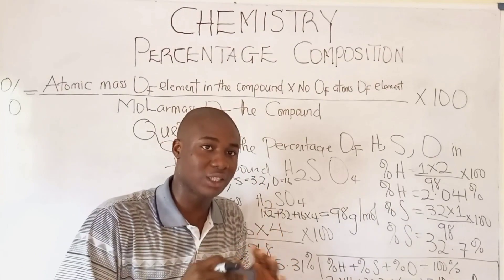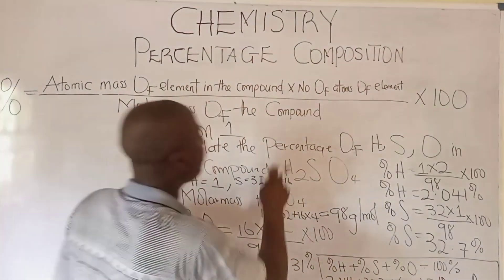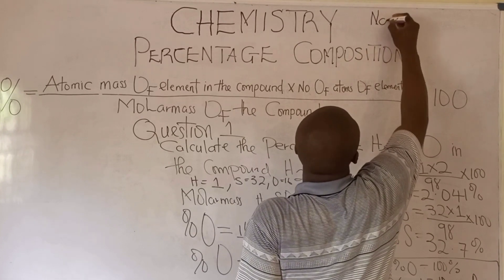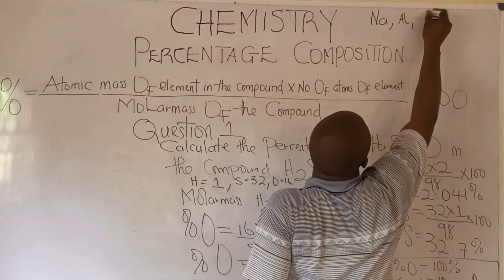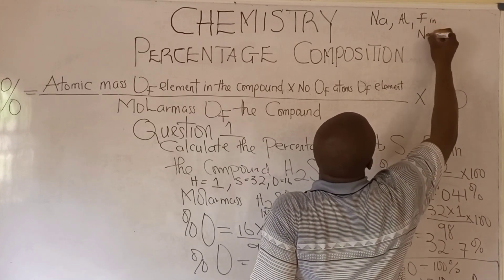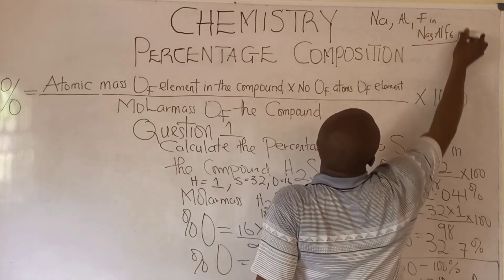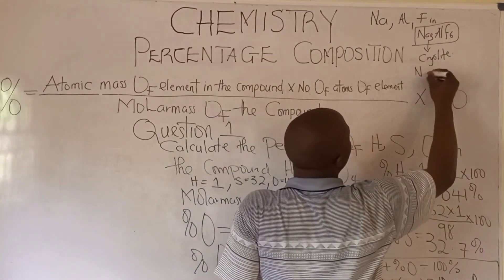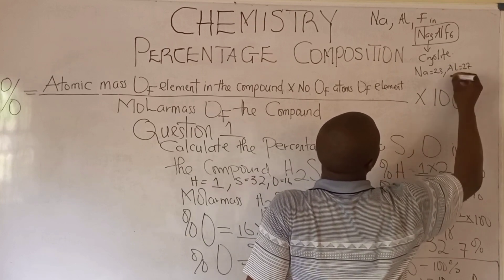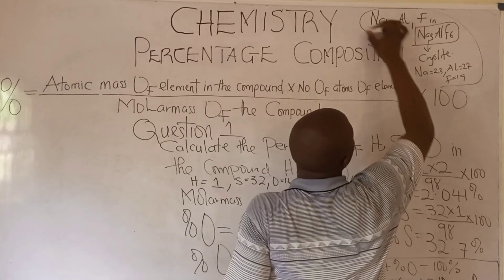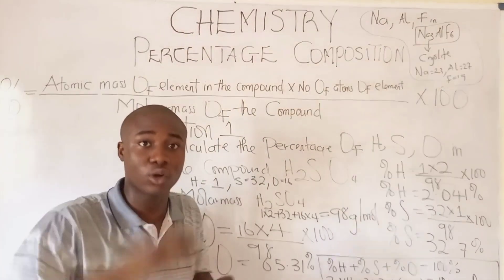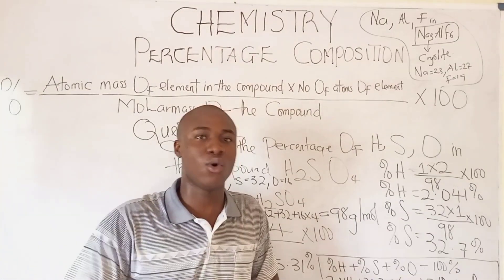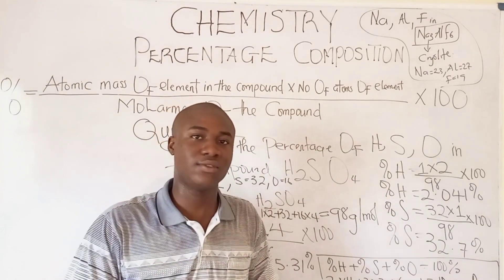Now for a practice question — provide your answer in the comment section below. Calculate the percentage composition of sodium, aluminum, and fluorine in the compound Na3AlF6. Note that this compound is also called cryolite. The atomic mass of sodium is 23, aluminum is 27, and fluorine is 19. Apply this formula and you'll get the answer. Thank you very much, God bless you all. Do subscribe to this channel and share this video with your friends.